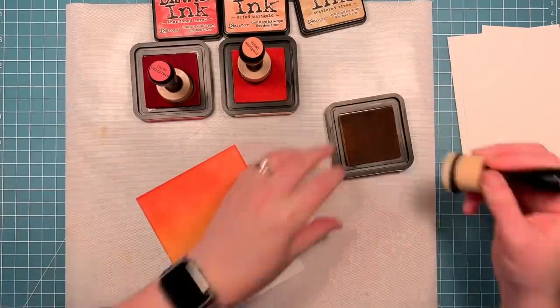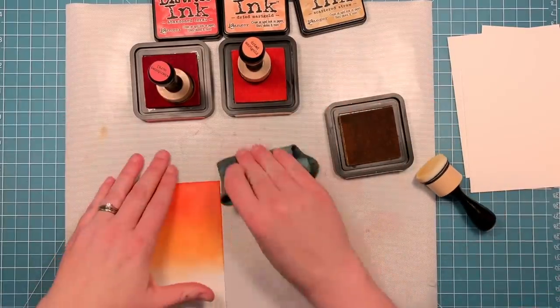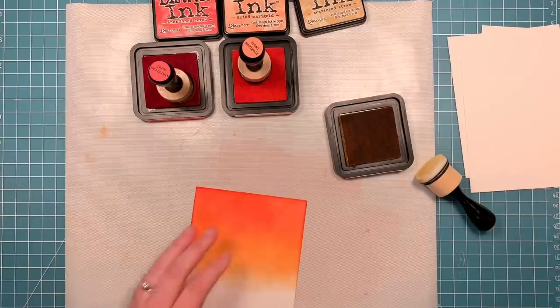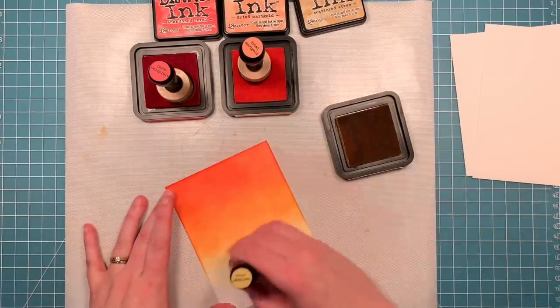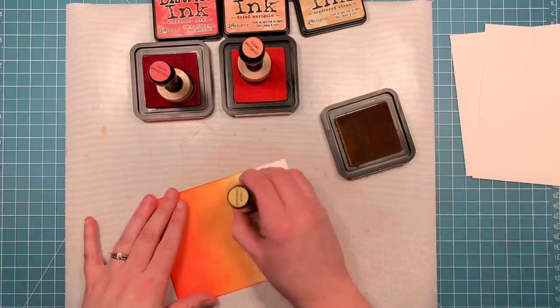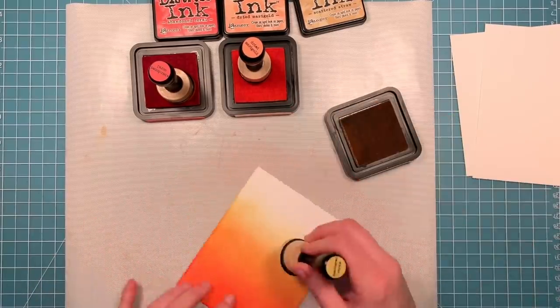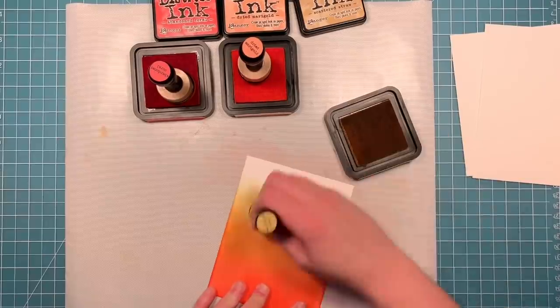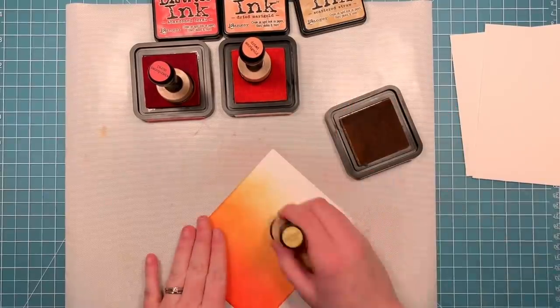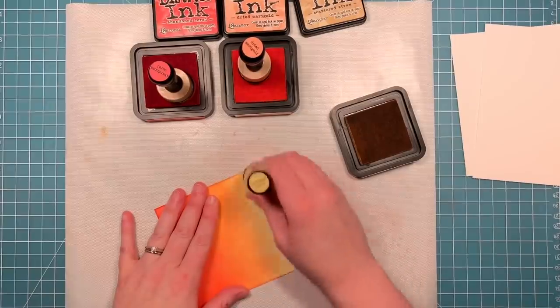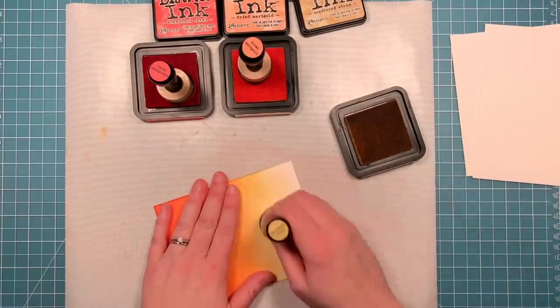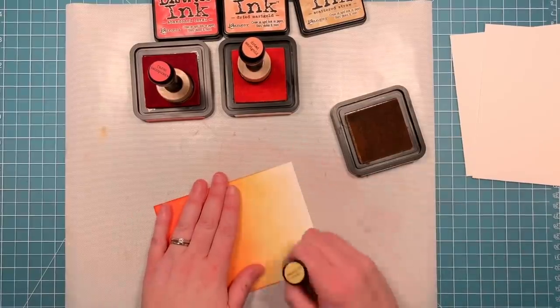Now I'm going to go in with scattered straw just below that dried marigold. I'm wiping up some of that abandoned coral just so I don't pull any of that in with this lighter yellow color. I'm trying to take it down to the white cardstock at the bottom so that it's white at the bottom.